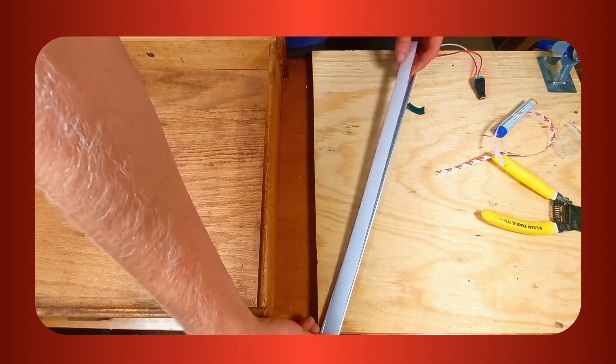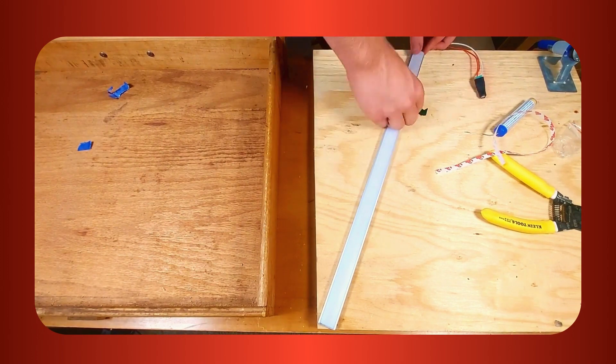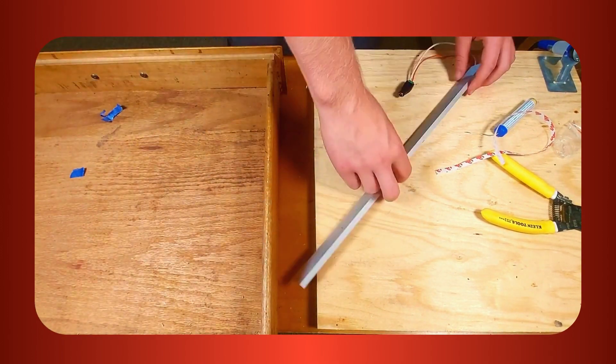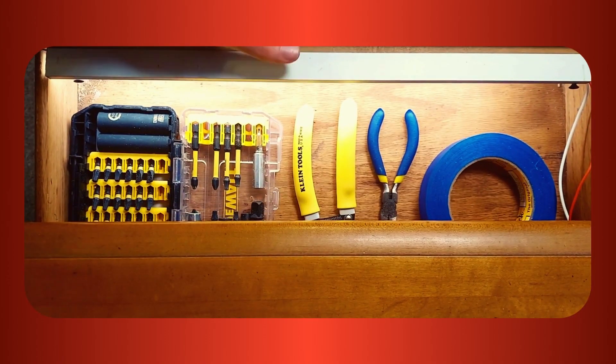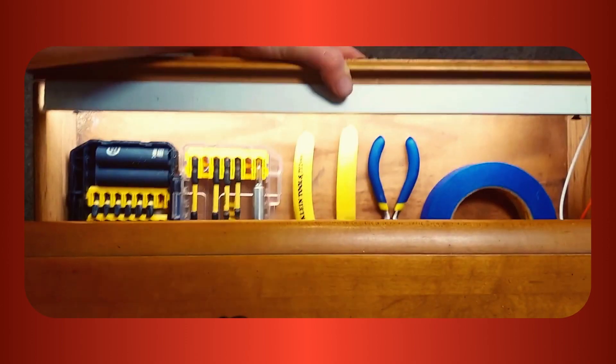When this is done, you can clip the diffuser back into the profile. There are a few ways to attach LED profiles, and we recommend glue, clips, or screws. Just remember, if you're going to use screws, you need to drill pilot holes in your profile and attach it before sticking in the LED strip.